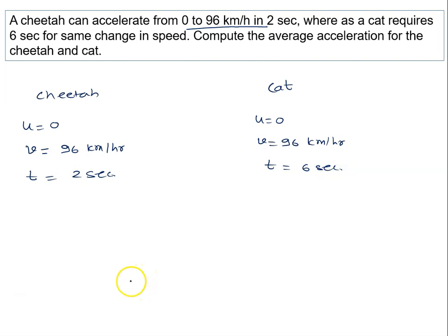Compute the average acceleration for cheetah and cat. We know acceleration is the rate of change of velocity, or you can say V minus U upon T.